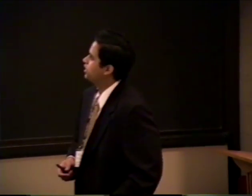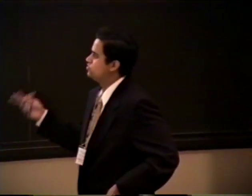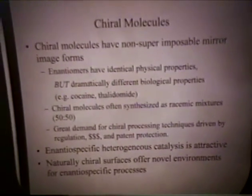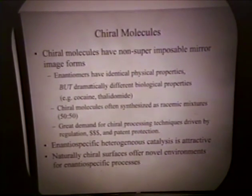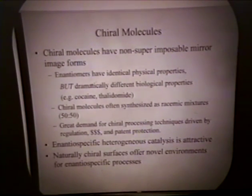Unfortunately, synthesis of these molecules in a non-chiral environment produces 50-50 ratios of these enantiomers. And separating them is difficult because, as I mentioned, the physical properties are exactly the same. So one attractive alternative is enantiospecific heterogeneous catalysis, which will allow for the selective production of just one enantiomer that you desire. Several groups have worked on this and there have been some reported successes, but the systems have been so complex that they haven't been able to get a fundamental understanding of the process.